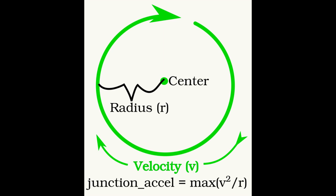This parameter is necessary because max jerk settings for the motors can be violated when cutting arcs. This parameter limits the velocity around the arc such that the velocity squared divided by the radius is less than or equal to the Junction Accel value.